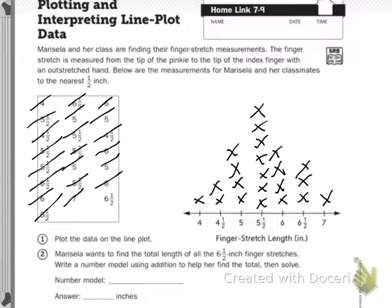Then it says Marcella wants to find the total length of all of the 6½ inch finger stretches. Write a number model using addition to help her find the total then solve. So there were three: 1, 2, 3. So I do 6½ plus 6½ plus 6½ equals T for total. So 6 plus 6 is 12, plus 6 is 18, plus a half is 18½, plus another half is 19, plus the other half is 19½. So 19½ inches is our total.